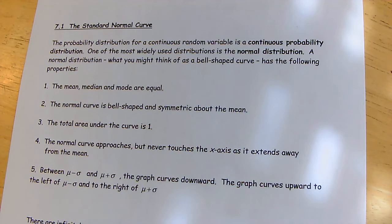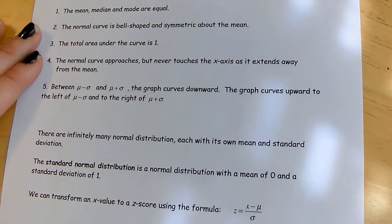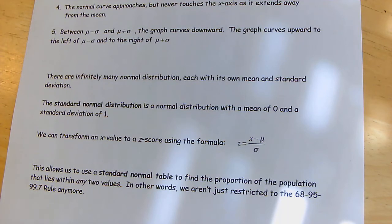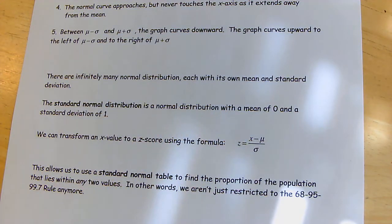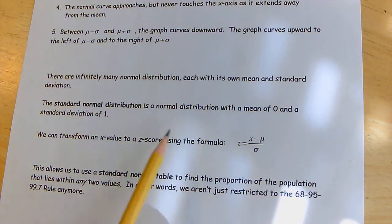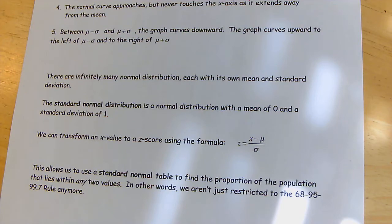There are infinitely many normal distributions, each with their own mean and standard deviation. For the standard normal distribution, we use the z-score formula to translate values onto a number line where zero is the mean, and values extend one, two, or three standard deviations above or below the mean.